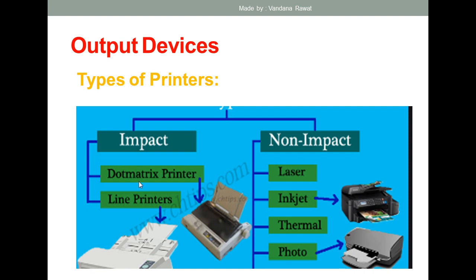Under impact printers we have the dot matrix printer, the line printer, and the daisy wheel printer. Under non-impact printers we have the types most commonly used in day-to-day life — the laser printer, which is the most commonly used today, the inkjet printer, the thermal printer, and photo printers.